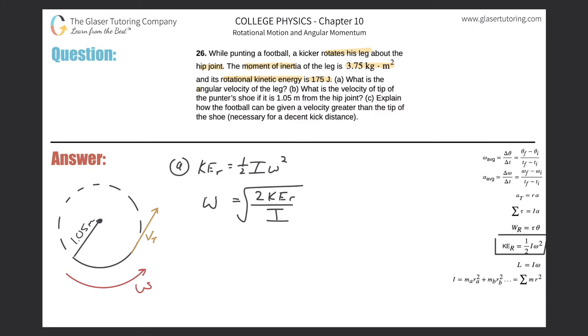The angular velocity is simply going to be the square root of two multiplied by that kinetic energy of 175 joules divided by that moment of inertia which they told us was 3.75. All we now need to do is plug it in.